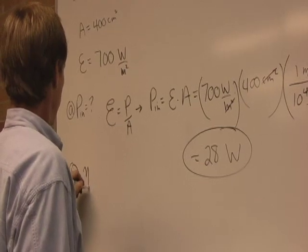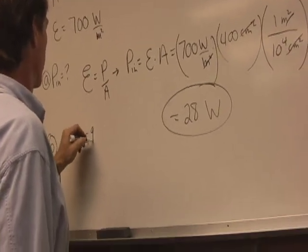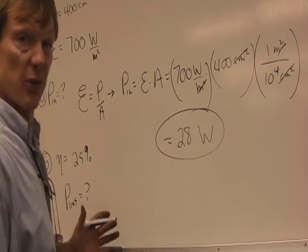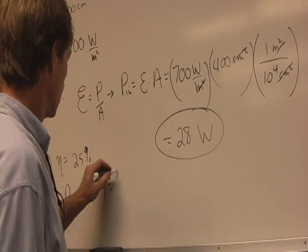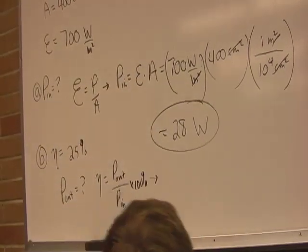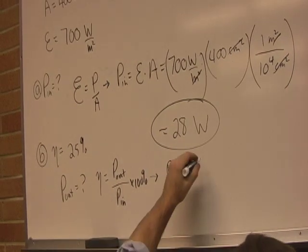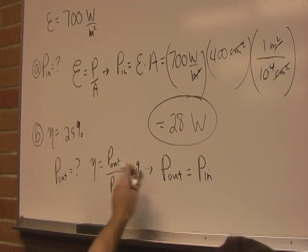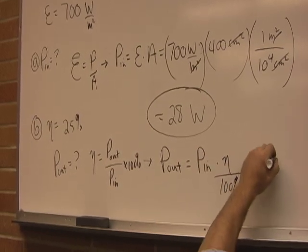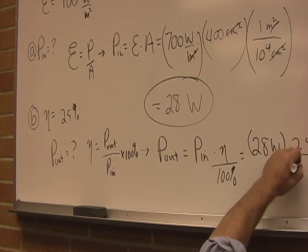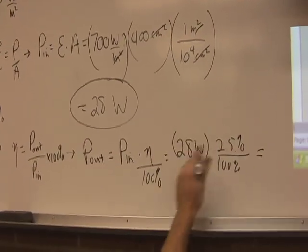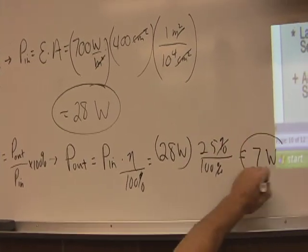Let's say my efficiency is 25%. What's the output power? That's going to be electrical this time. It's just a reverse of the last example. Efficiency is output over input power times 100%. So the output power is equal to the input power. Multiply both sides by input. Efficiency is still on top. Divide both sides by 100%. So that's going to be 28 watts times 25% over 100%, which is going to be 7 watts.